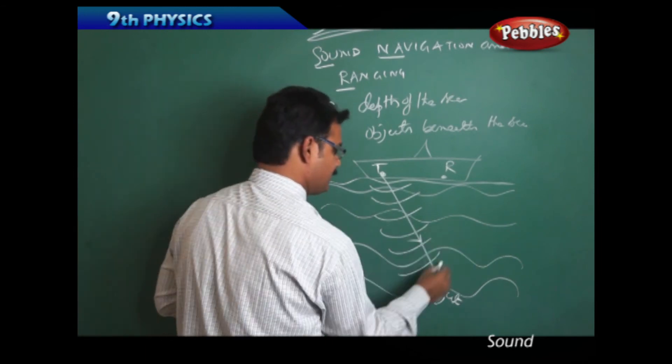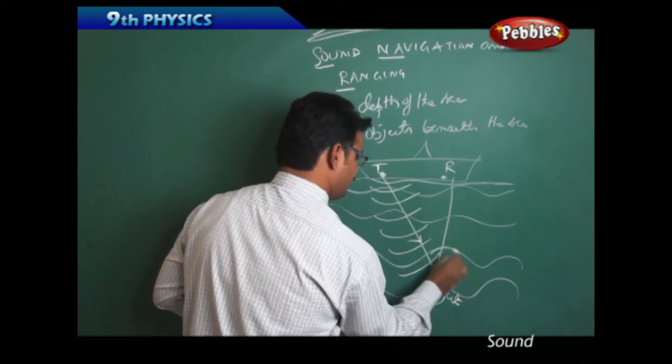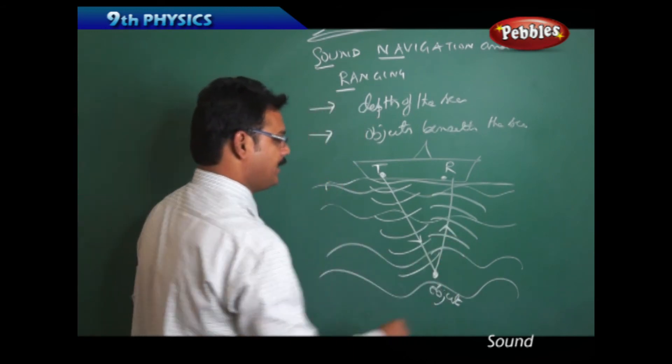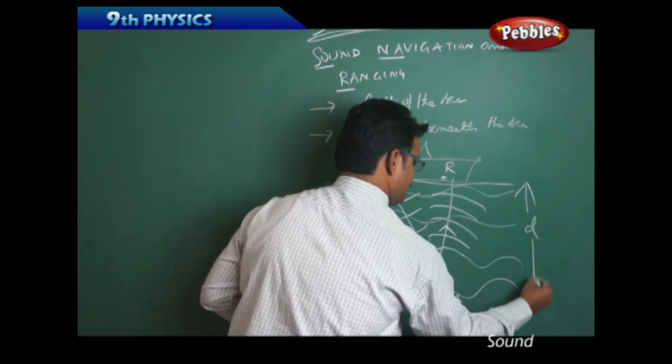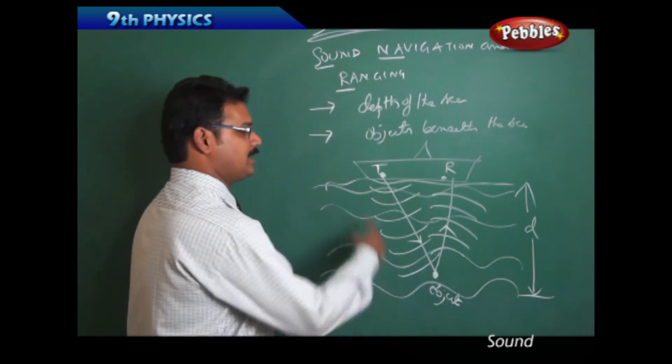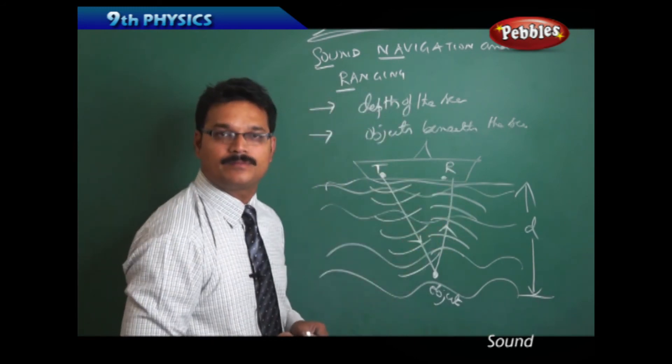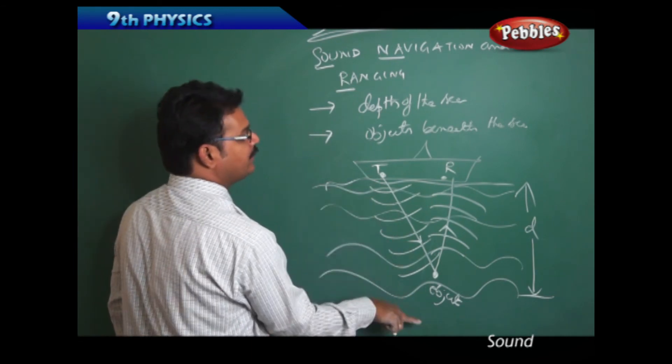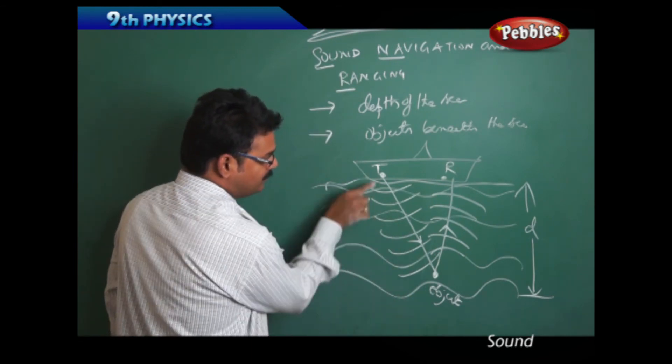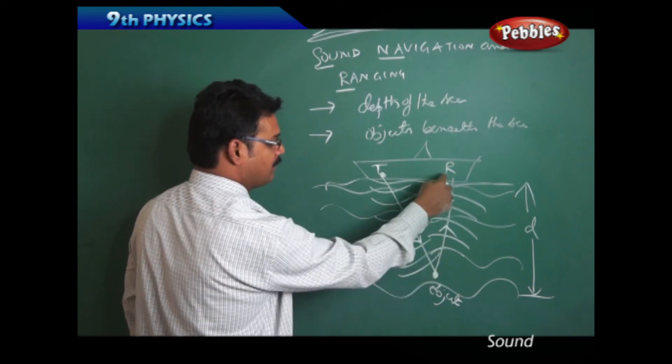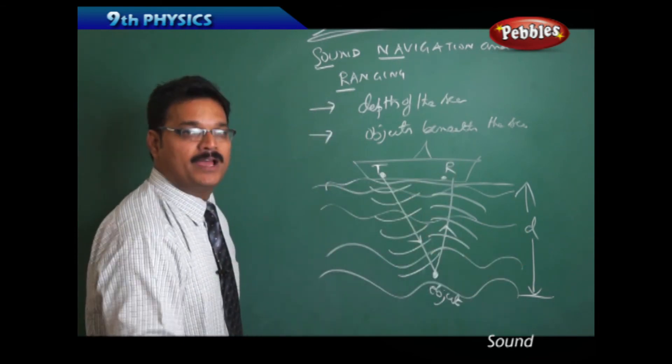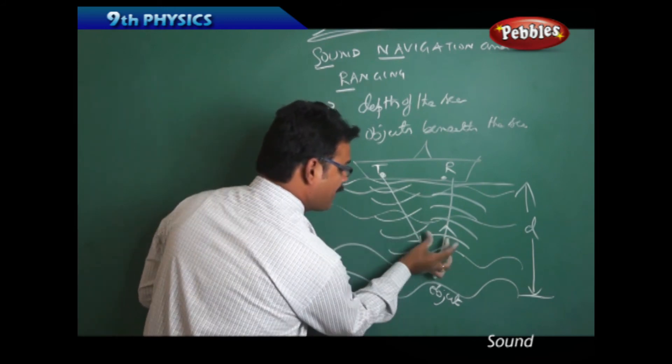Say the distance between the object and the ship is d. As this sound wave or the ultrasonic is traveling two times - here to here one time, here another time - so two times traveling, the total distance traveled is 2d, assuming that the two lines are parallel to each other.